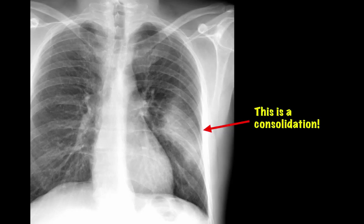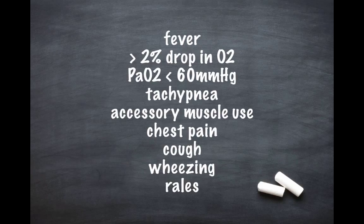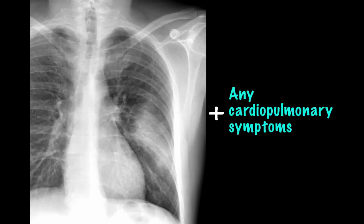Acute chest syndrome is a two-part definition: a new radiographic infiltrate, as pictured in the left lung field of this chest x-ray, combined with any of the following — fever, greater than 2% drop in O2, PaO2 less than 60, tachypnea, accessory muscle use, chest pain, cough, wheezing, or rales. As you can see, the definition for the second half of the diagnosis is quite broad. A new radiographic infiltrate plus any cardiopulmonary symptoms.